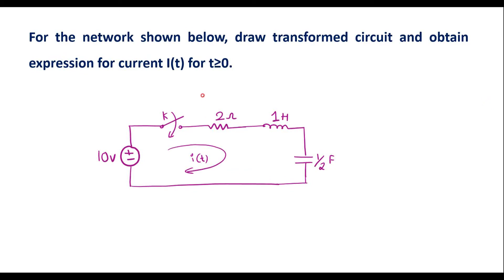In this video, I will consider one numerical on Laplace transform. For the network shown below, draw the transformed circuit and obtain an expression for current I(t) for t greater than or equal to 0. This is the given circuit — a series RLC circuit connected to a voltage source — with current I(t) flowing in it.